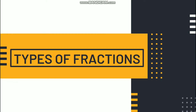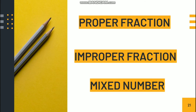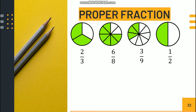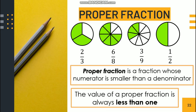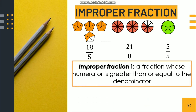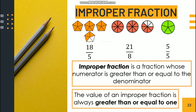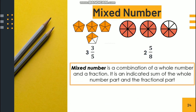Let's have the types of fractions. Fractions have three types: proper fraction, improper fraction, and mixed number. A proper fraction has a smaller numerator than its denominator, and its value is always less than one. An improper fraction has a numerator that is greater than or equal to the denominator, and its value is always greater than or equal to one. A mixed number is a combination of a whole number and a fraction — it is an indicated sum of the whole number part and the fractional part.